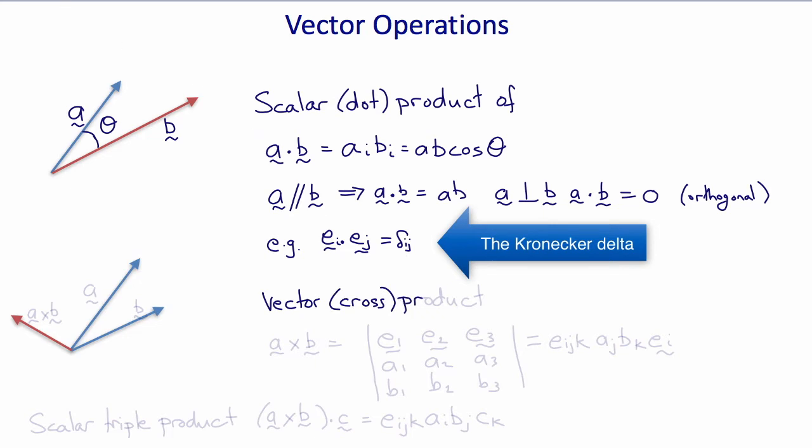That is, when ei is dotted with itself, e1 dotted with e1 is one. E1 dotted with e2 is zero. So every time a unit vector is dotted with itself you get one, every time it's dotted with one of the other unit vectors you get zero. Therefore, in general, ei dot ej equals delta ij, the Kronecker delta.